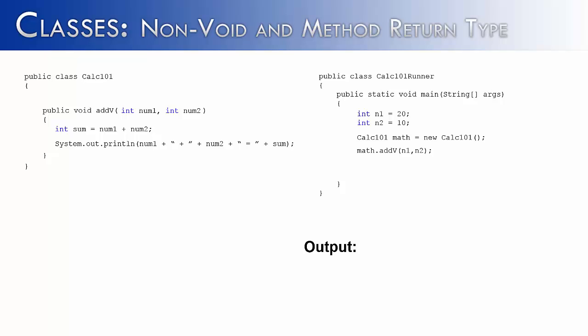In this video, I'd like to look at two things: non-void methods and a method's return type. A method's return type is going to be found in the method header, or where a method is created. You can see that in the calc101 class, in the method called addV, we have a return type of void.